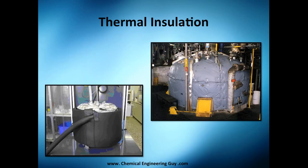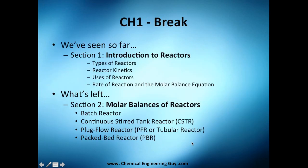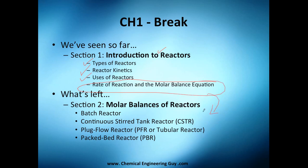If you want to maintain a specific temperature in a reactor — for example to stay at an isothermal condition — you need to invest in thermal insulation. Otherwise, you'll spend too much on heating requirements. That's everything for section one. We covered an introduction to reactors, types of reactors, and their uses. Next up: section two — molar balances for batch reactors, continuous stirred tank reactors, plug flow reactors, and packed bed reactors.